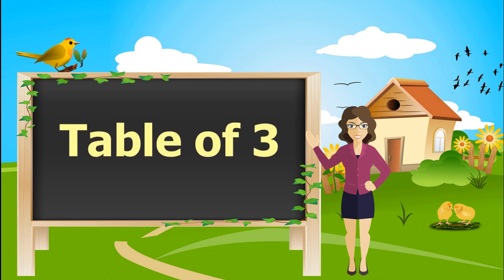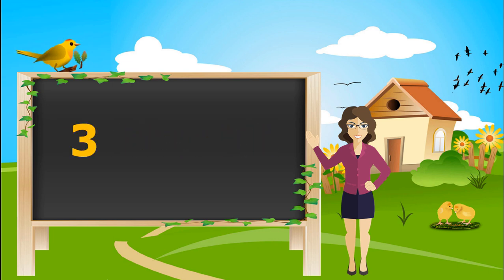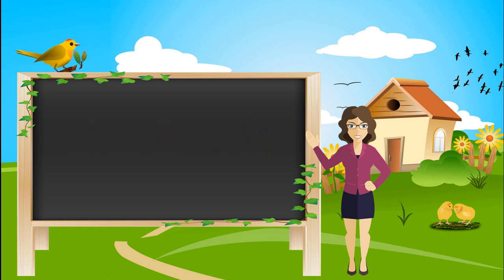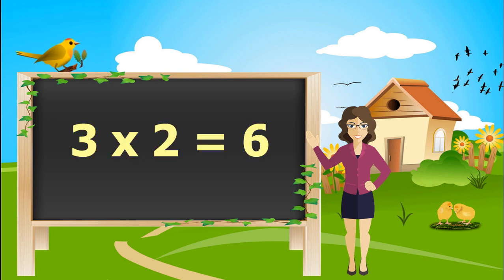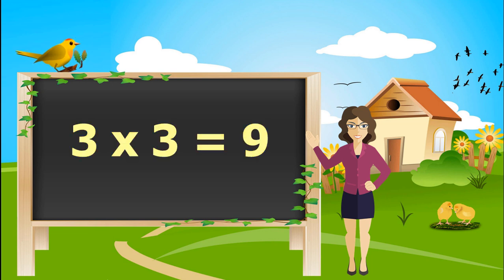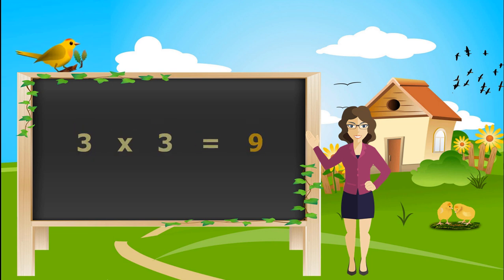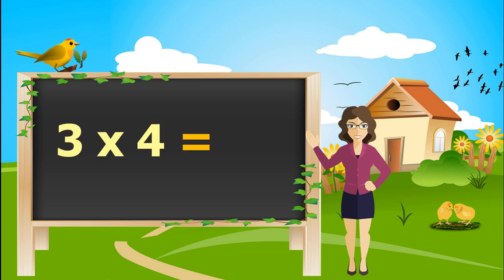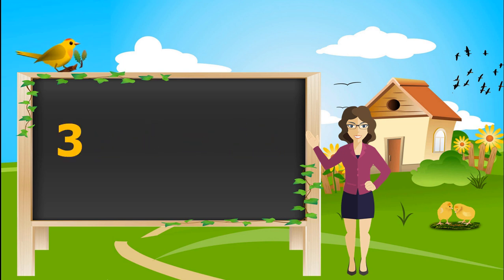Let's learn the table of 3. 3 times 1 is 3. 3 times 2's are 6. 3 times 3's are 9. 3 times 4's are 12. 3 times 5's are 15.